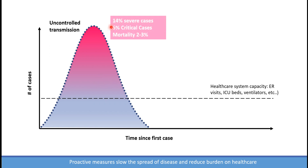We know now that at least 14% of cases are severe cases, 5% are critical cases, and the mortality associated with the disease is between 2% to 3%. The mortality may be variable from one country to another, and it may differ depending on the time within the outbreak in a specific country.